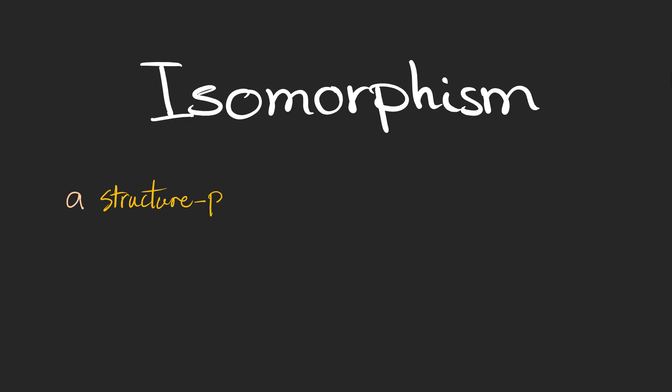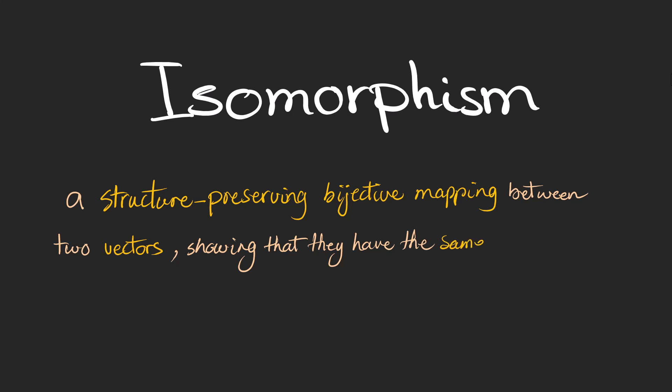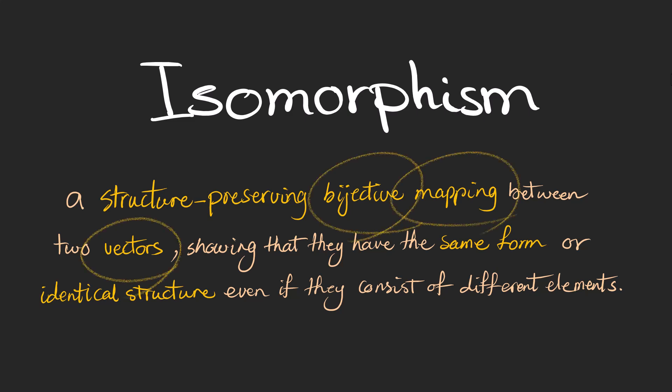In linear algebra, isomorphism is a structure-preserving bijective mapping or transformation between two vectors showing that they have the same form or shape or identical structure even if they consist of different elements. So vectors are the elements of a structure we call a vector space and isomorphism is a bijective mapping which is a kind of transformation that maps a vector space to another one, maybe with different elements but it preserves the structure.